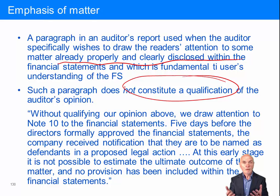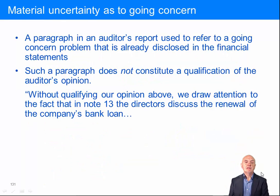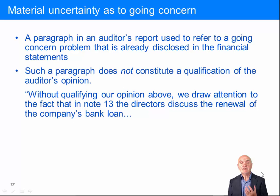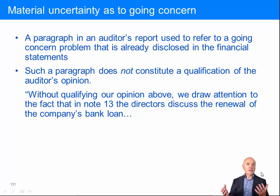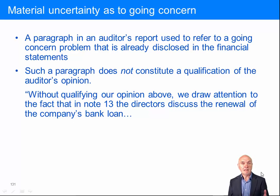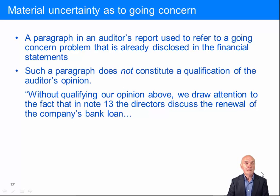There's a kind of special emphasis of matter paragraph — new with this new audit report. If there's a material uncertainty as to going concern, it will be headed up as that. This is very like emphasis of matter: it's a paragraph in the auditor's report used to refer to a going concern problem that is already disclosed in the financial statements. So again, nothing wrong with the financial statements; it is therefore not any sort of modification to the auditor's opinion, any sort of qualification or adverse opinion. It's added as an additional warning to people: go and look at note 13. For example: 'Without qualifying our opinion above, we draw attention to the fact that in note 13 the directors discuss the renewal of the company's bank loan' — and presumably the bank isn't responding to their requests, and therefore there may be difficulty in going concern for the foreseeable future.